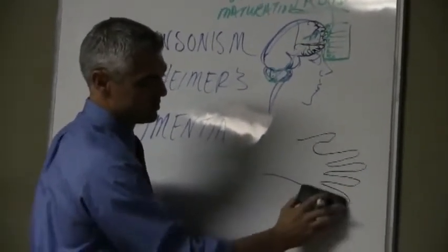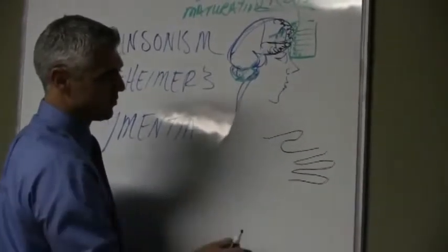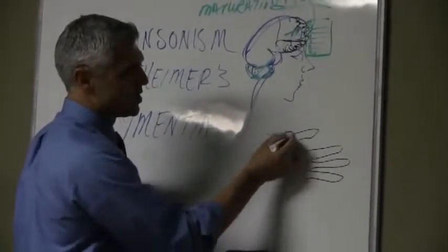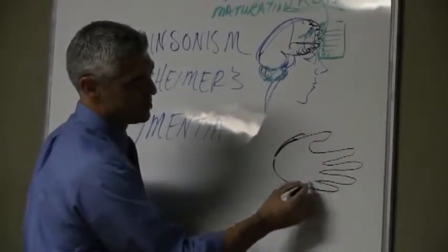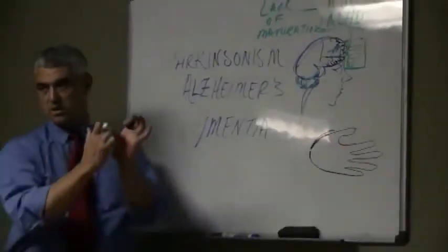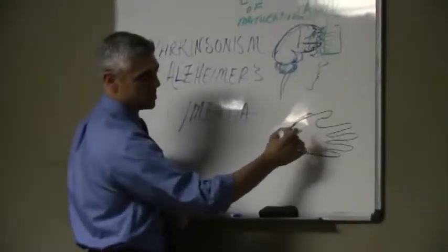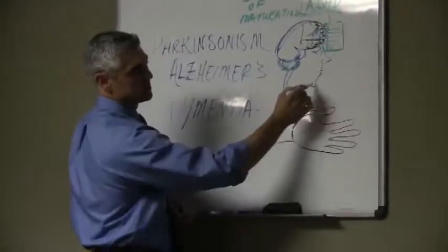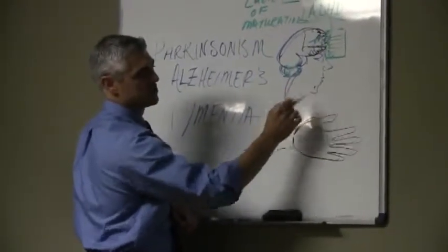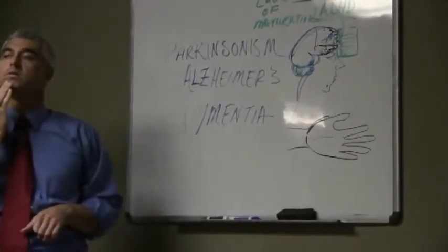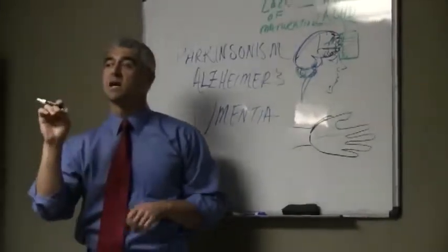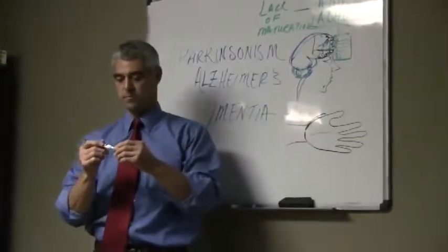Remember the palmomental reflex? We talked about that before? A few of you have heard it before, right? So the palm of the hand, when we stroke the palm with something sharp, when we stroke the palm, what happens is the chin will actually quiver. So you'll see the chin will quiver. So that's a sign of frontal lobe demise.